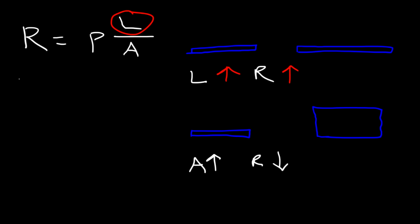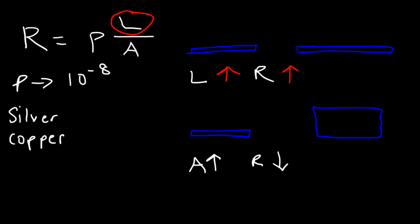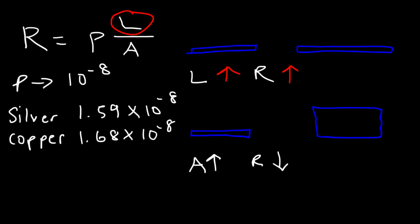For a good conductor like a metal, the resistivity is in the range of 10 to the minus 8 — pretty low. Metals have low resistivity, which means they're very good conductors. Two good conductors are silver and copper. Silver has a resistivity of 1.59 times 10 to the negative 8, and copper is about 1.68 times 10 to the negative 8. Which of these two metals is a better conductor based on their resistivity values?